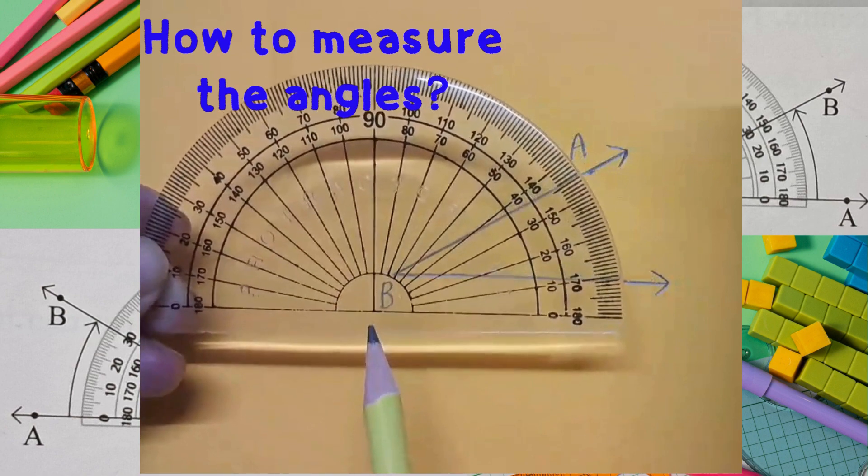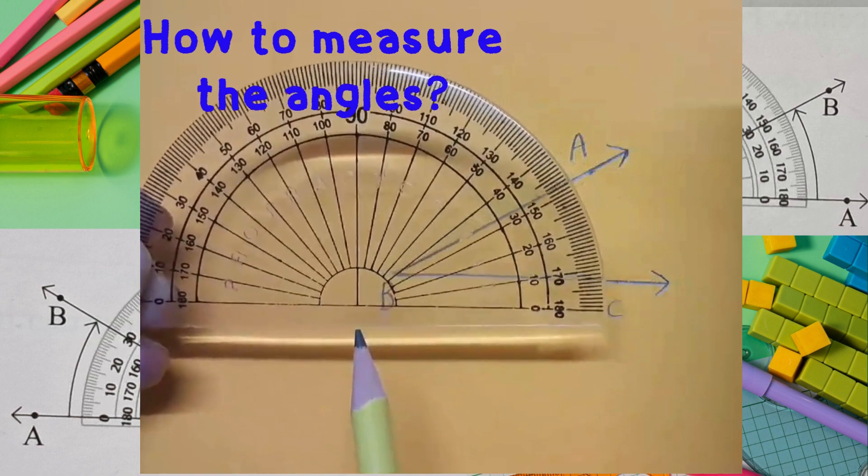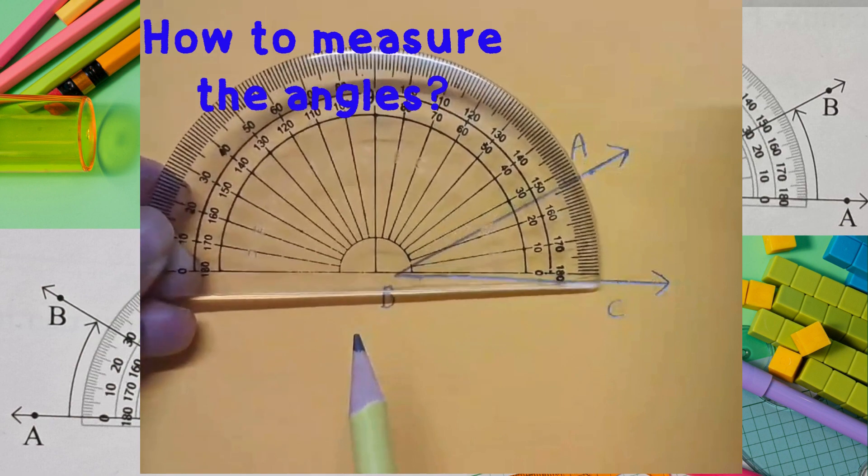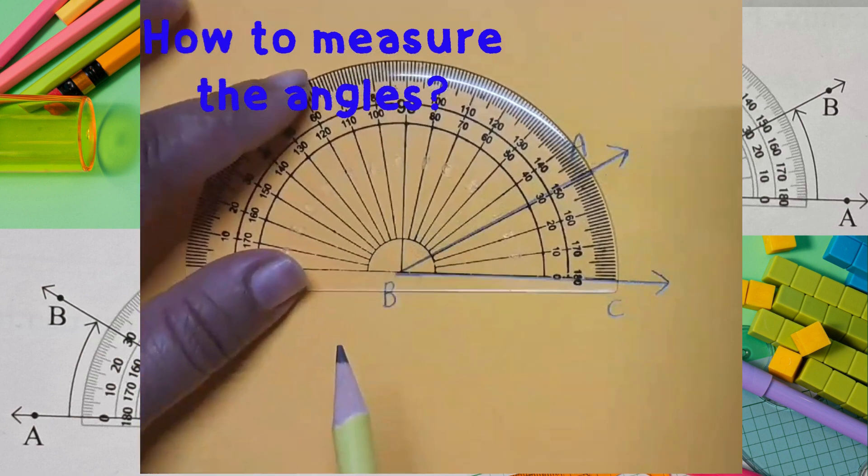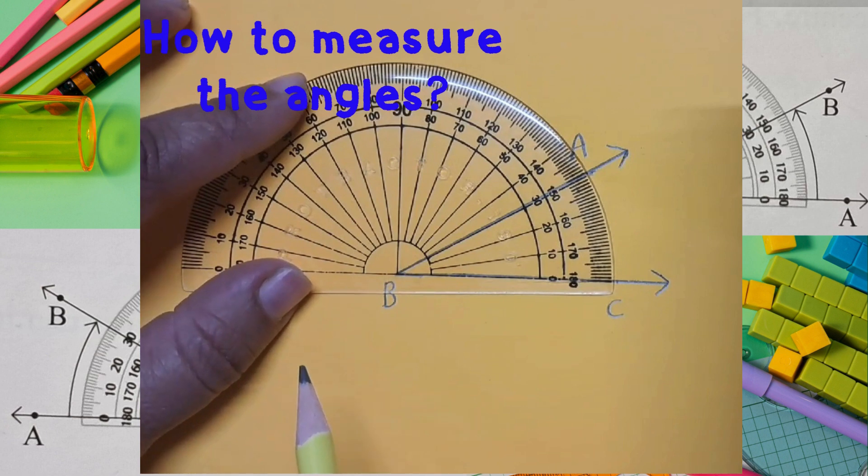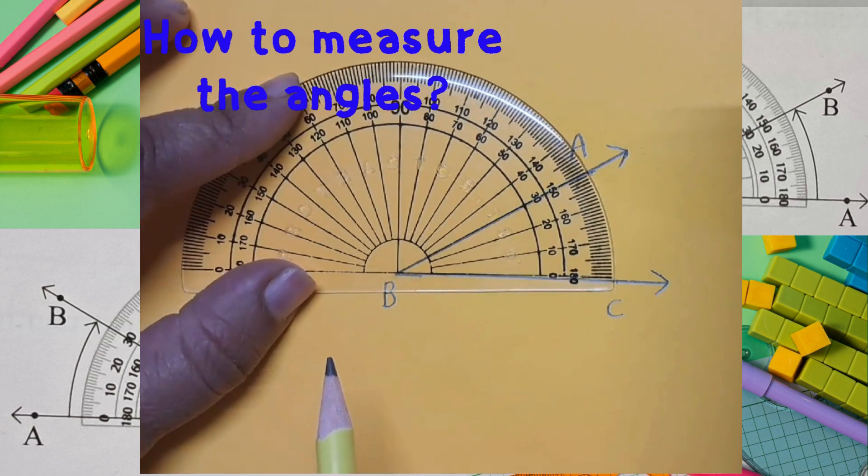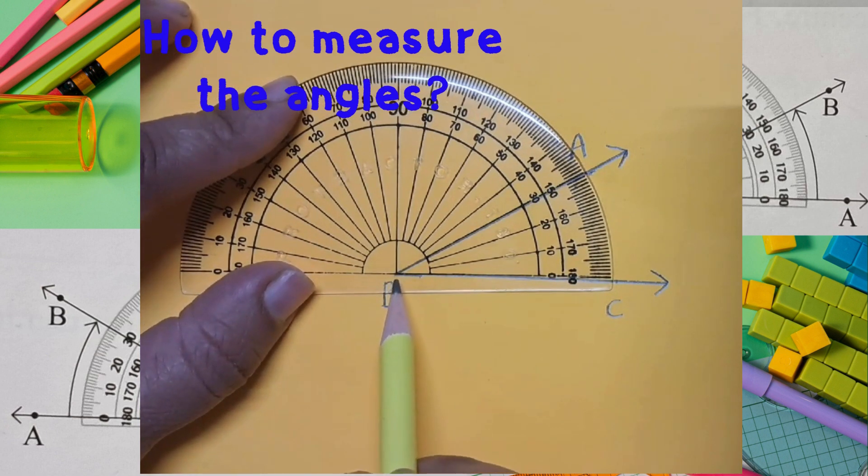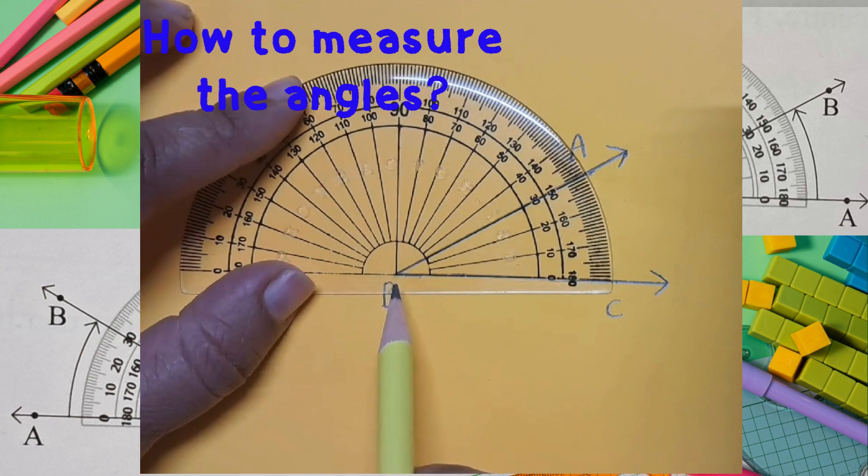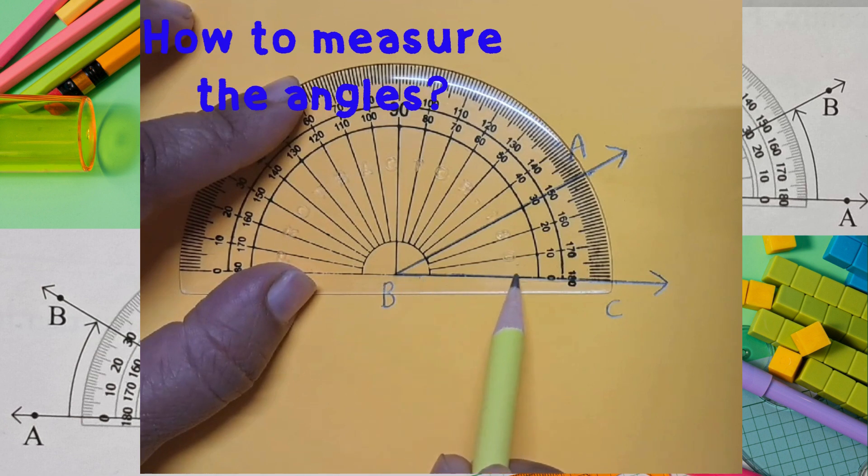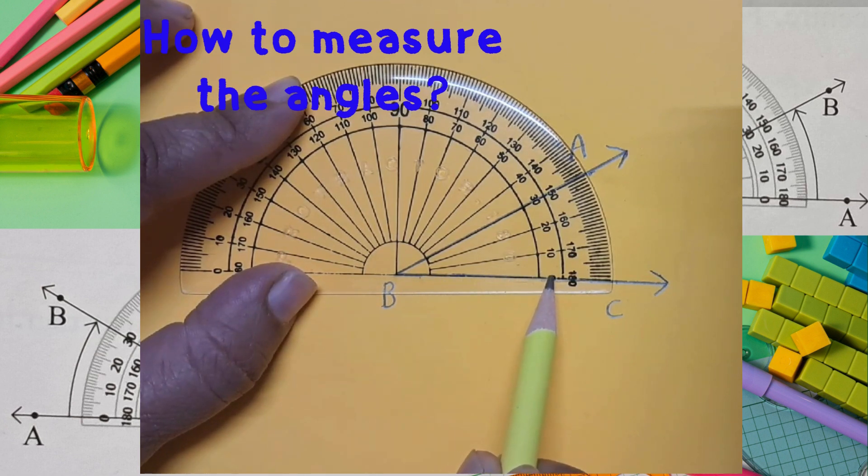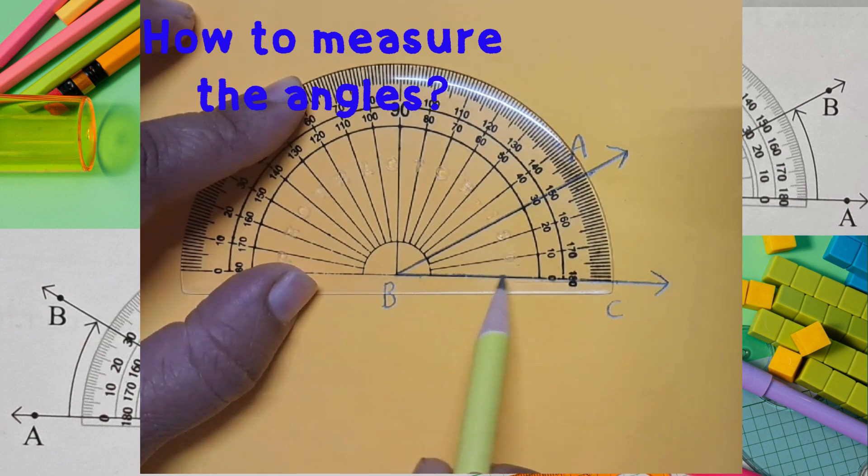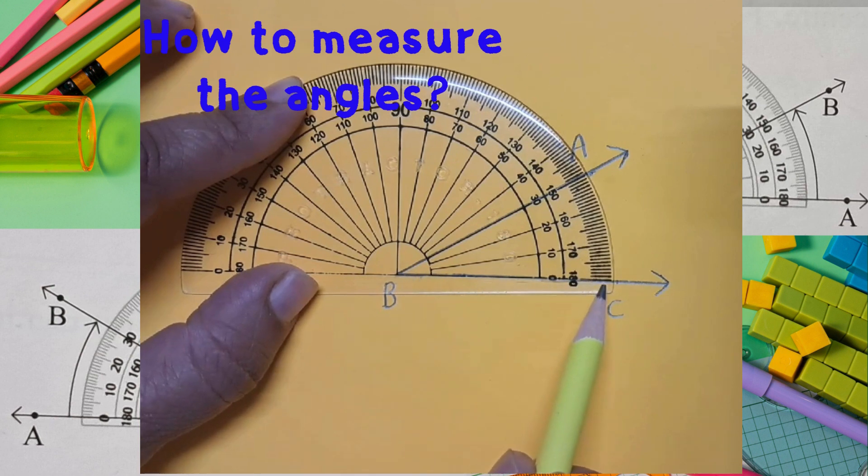Now let's learn to measure angle ABC. First step, place the central point of the protractor on the vertex B. You have to ensure that the 0 line of the protractor should coincide with the one arm of the angle. Say here, ray BC.